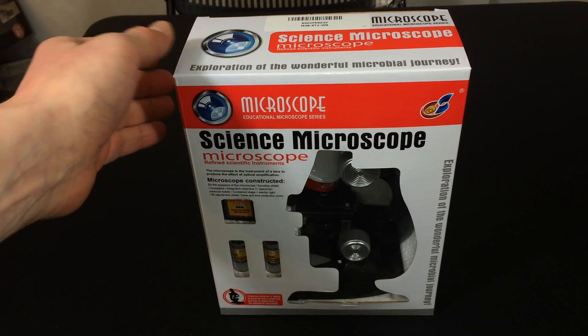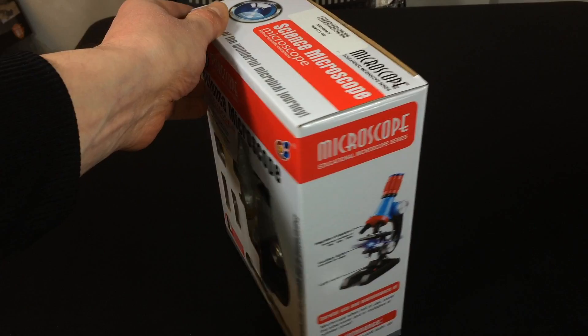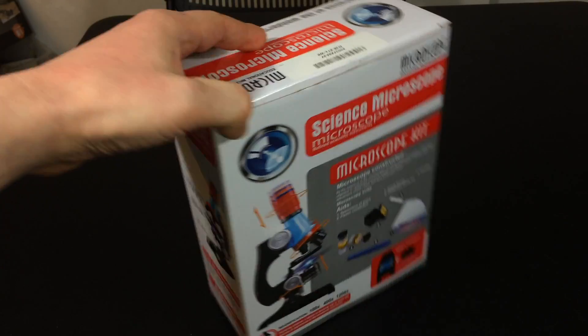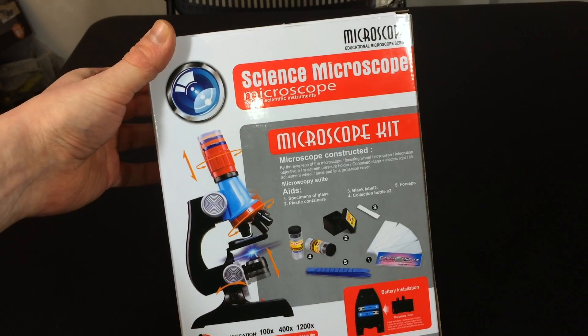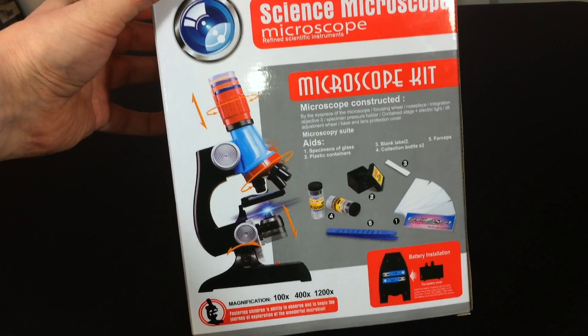So we're going to unbox it together and we're also going to look at what's included and we're going to try to see down the actual microscope lens to see if we could see anything. But this is the box. Let's just see what it comes with.